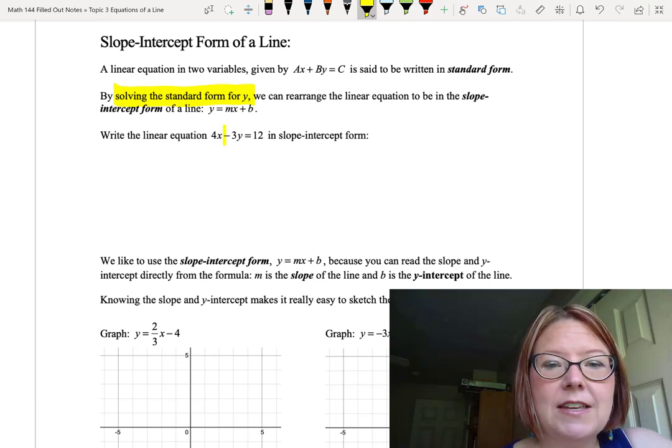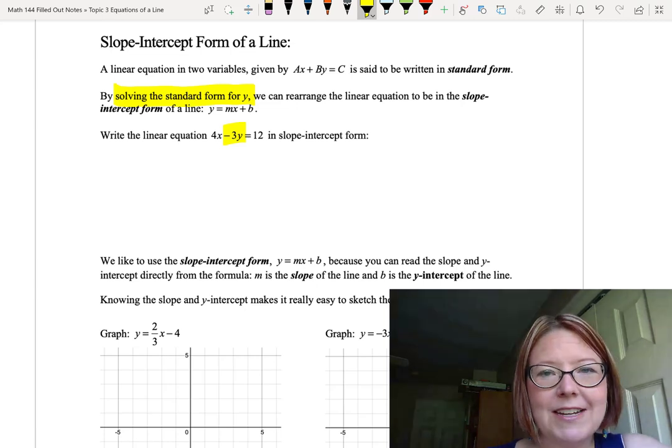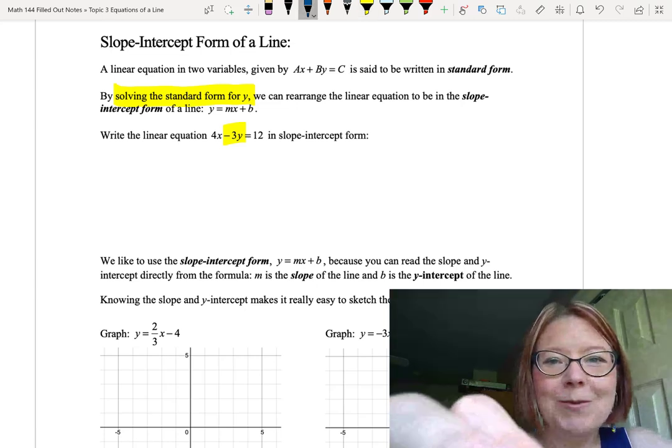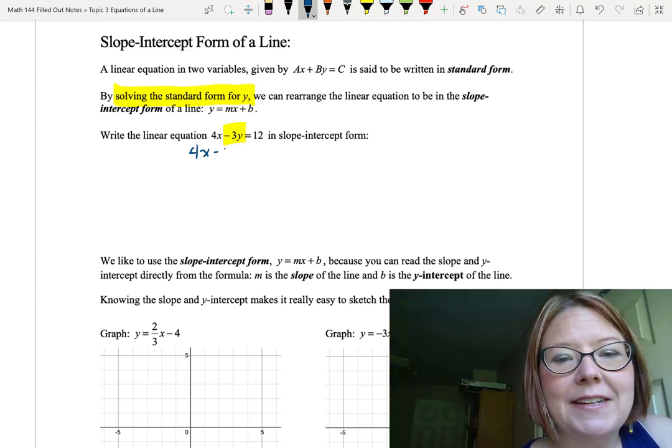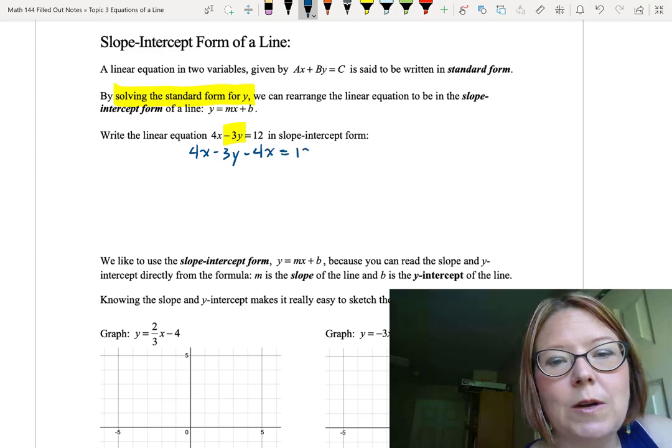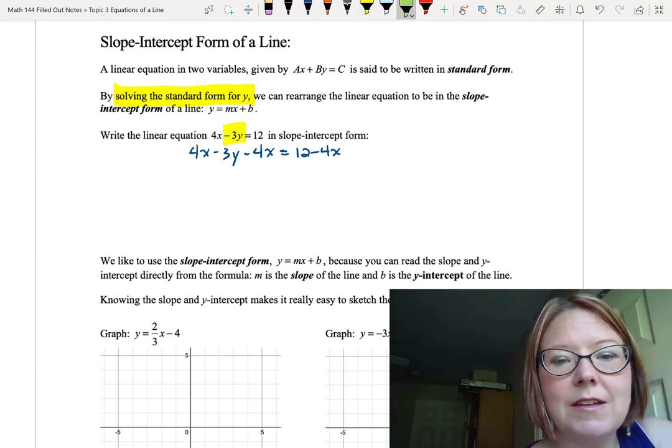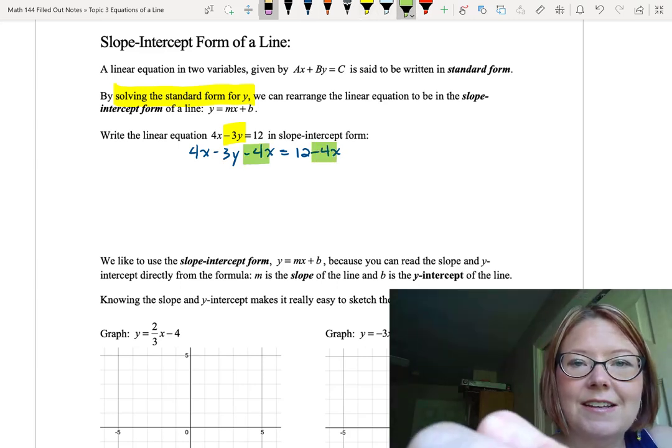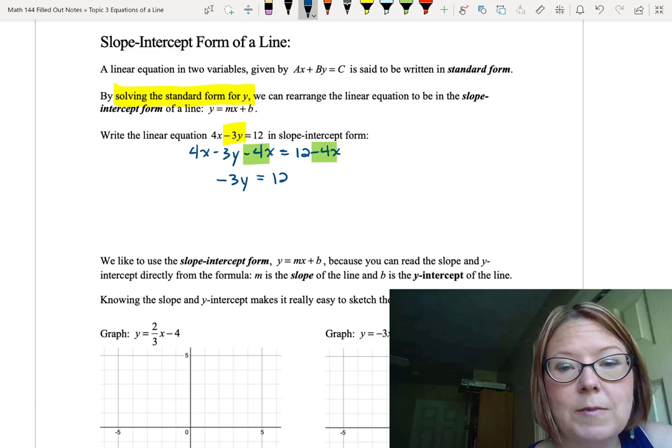If I want to isolate that negative 3y term, I need to move the 4x to the other side. So I'm going to subtract 4x from both sides. That gives us 4x minus 3y minus 4x equals 12 minus 4x. You can see we did the exact same thing, subtracting 4x on both sides.